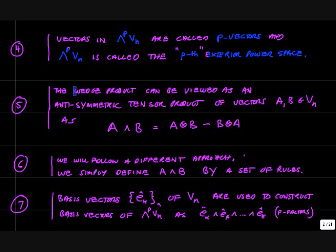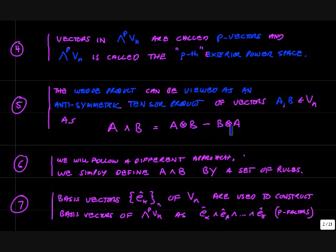One way to look at the wedge product is that it is the anti-symmetric tensor product of two vectors in Vn. You can define A wedge B as the tensor product AB minus the tensor product BA. However, we're going to follow a different approach — we don't need to go into tensor algebra. We're simply going to define the product A wedge B by a set of abstract algebraic rules, which simplifies the process and makes it self-contained.